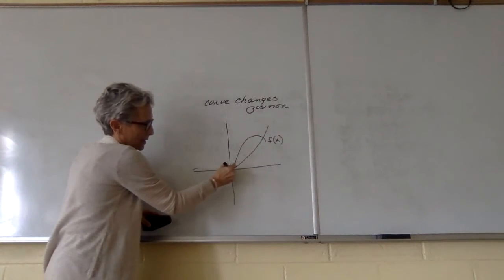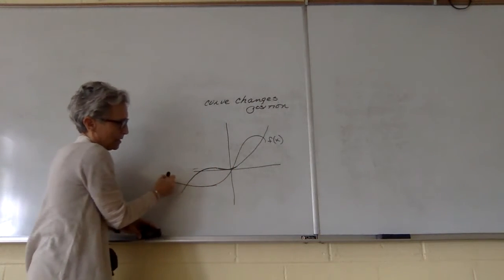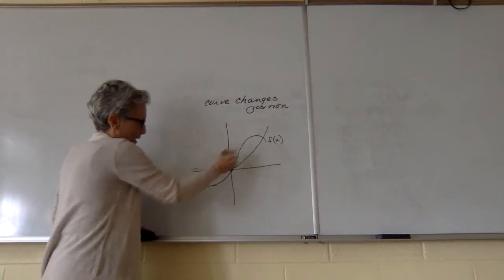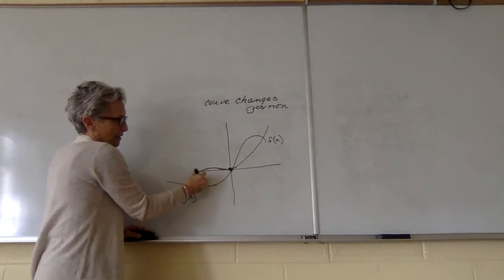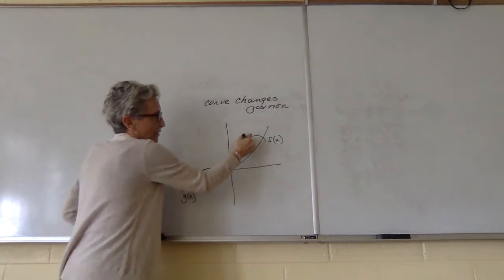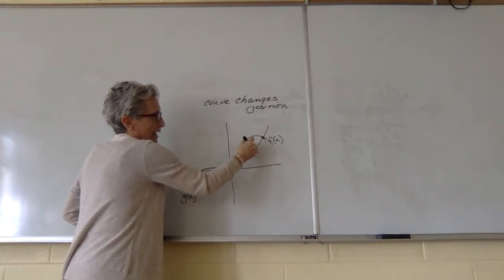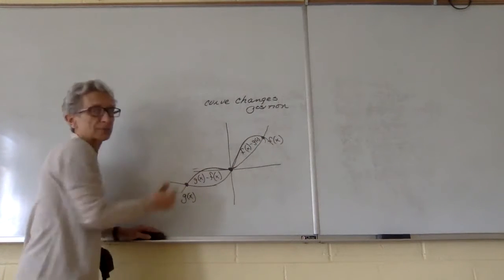If it's like this and I'm coming down and over, from this point to this point, you have G of X minus F of X. But from this point to here, you're going to say F of X minus G of X. So you're going to treat them separately.